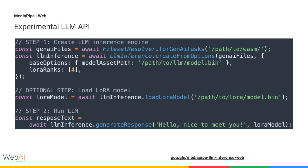The format of the experimental LLM API is nearly identical to what we saw earlier with the image segmenter task. You create an LLM inference engine first, and then when desired, you ask it to generate responses to queries. One notable difference is that as an optional extra step, we can load LoRA models for custom specializations of the base model, so that when we later query the LLM, we can dynamically swap between these specializations.